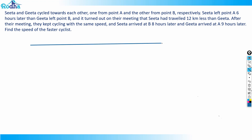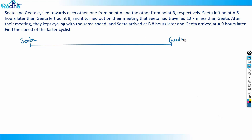Never solve a time-distance question without a diagram — the diagram is the utmost important thing. So let's say Sita is at point A and Gita is at point B, and they cycle towards each other. They meet at some point. Sita left point A six hours later than Gita left point B, and at their meeting, Sita had traveled 12 kilometers less than Gita. Let's now learn the concept for this.